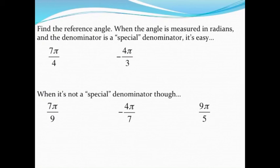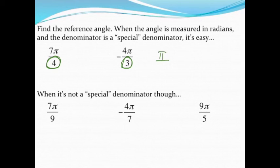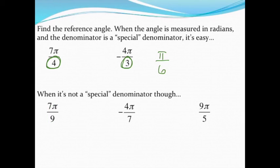We've already taken a look at how to find reference angles in radians when our denominator is one of the special denominators — whether that's a three, four, or six. When we don't have that case, I'll need to do something a little bit different. It's not as easy as just stating the reference angle, but it's not too complicated. Basically, what we're trying to do is get to the x-axis.